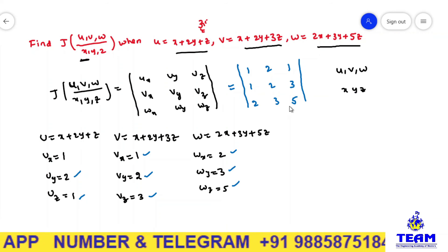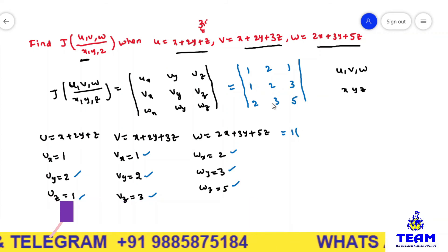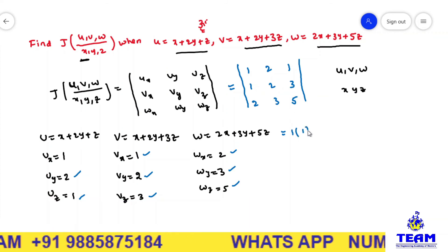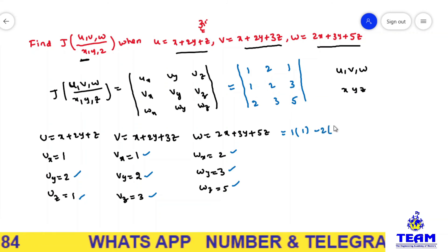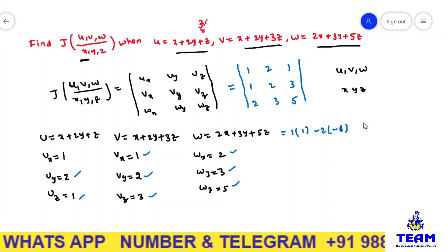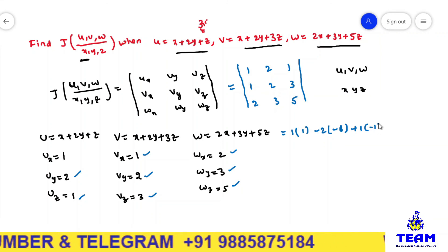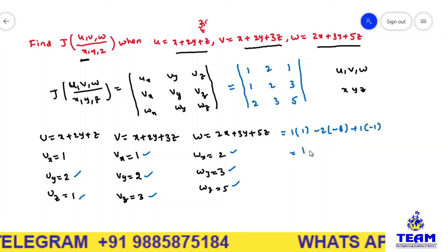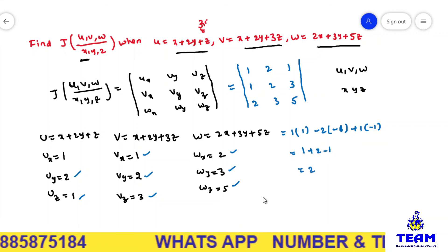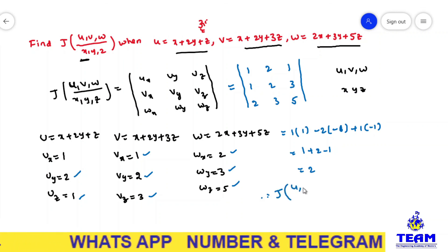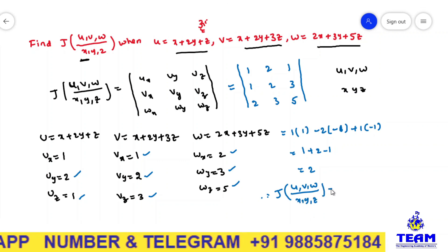Now we need to find out the determinant. Expanding: 1 times (2×5 minus 3×3) minus 2 times (1×5 minus 3×2) plus 1 times (1×3 minus 2×2). That gives 1×(10−9) minus 2×(5−6) plus 1×(3−4), which is 1 plus 2 minus 1, equals 2. Therefore the Jacobian of u, v, w with respect to x, y, z is equal to 2.